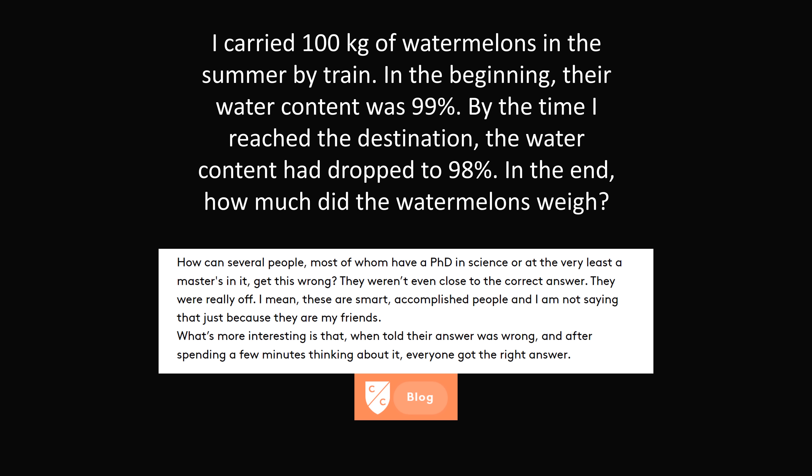So what is the right answer? It is 50 kilograms. You lose a surprising half of the weight when the water content drops from 99% to 98%. So since the answer is so surprising, let's work out carefully why the answer is 50 kilograms.